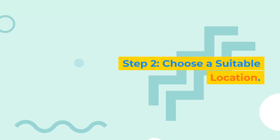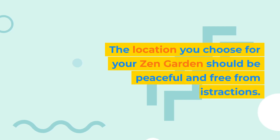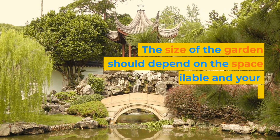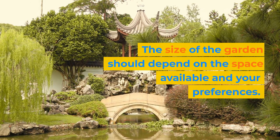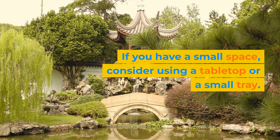Step 2: Choose a Suitable Location. The location you choose for your Zen Garden should be peaceful and free from distractions. The ideal location is usually a quiet corner of your home or backyard. The size of the garden should depend on the space available and your preferences. If you have a small space, consider using a tabletop or a small tray.